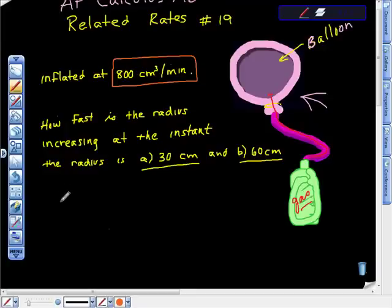My question to you is, what rate is this? This is the rate at which the volume is changing over time, so this is dV/dt - the rate of change in volume as time goes by - and it's 800 cubic centimeters per minute.